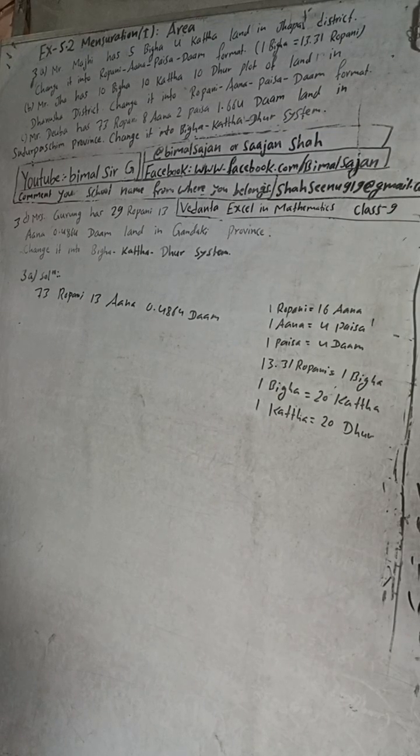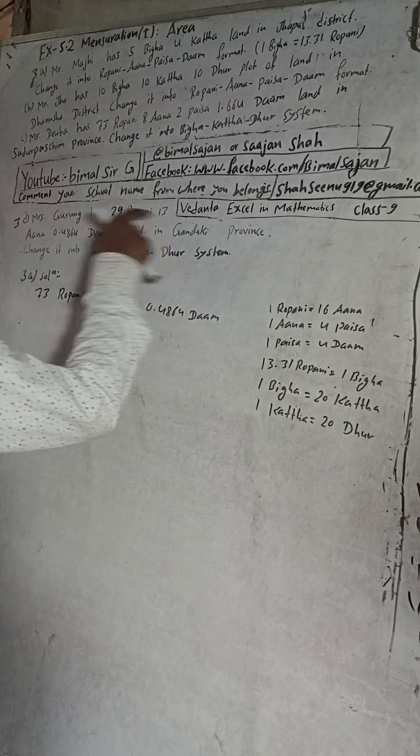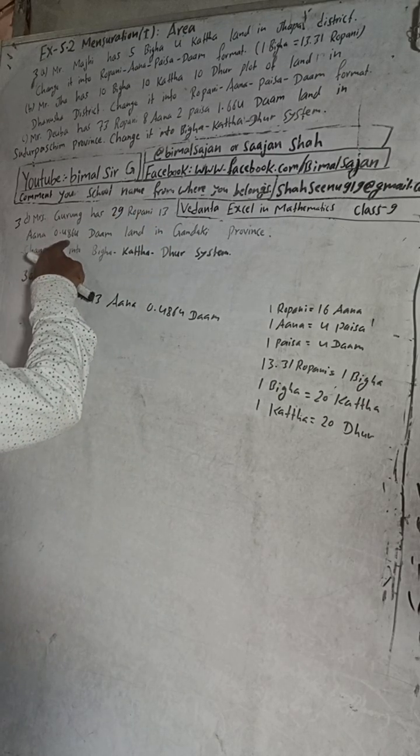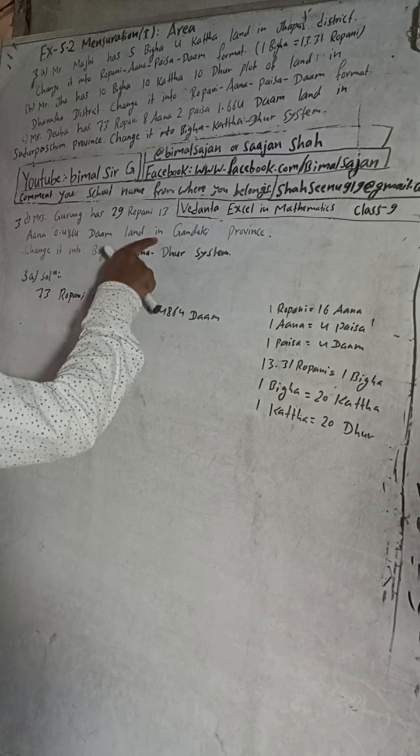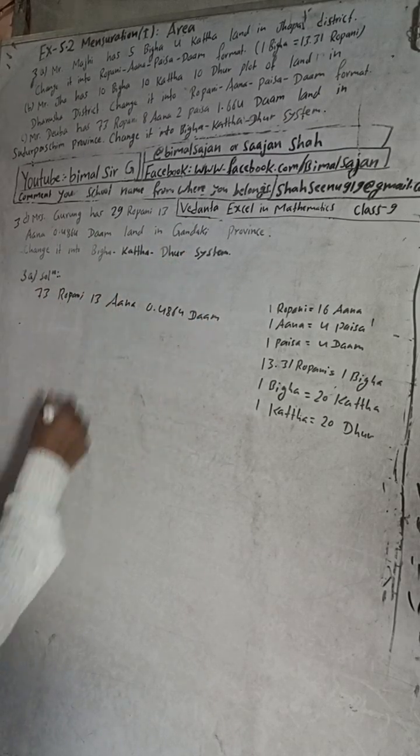Hi class 9 and 10 students, welcome back to Bhimalswarji YouTube channel. This is question number 3D, exercise 5.2, mensuration. First part area, Vedant XR in Mathematics class 9. The question is Mrs. Burung has 29 Ropuni 13 Ana 0.4864 Dham length in Gattaki Pradhan, change it into Digha Kathar Bhur system.